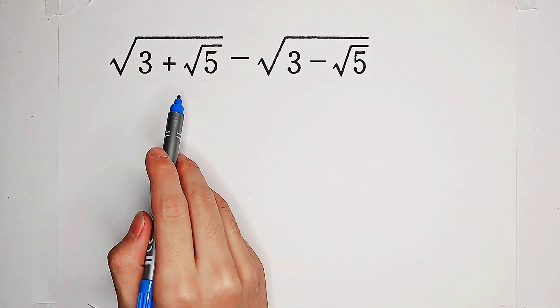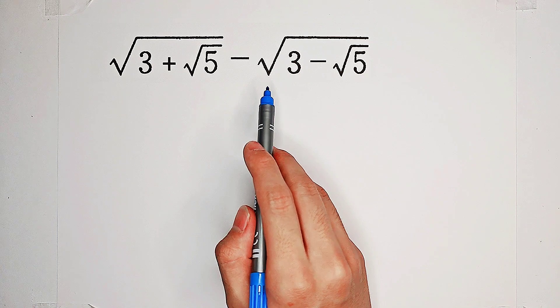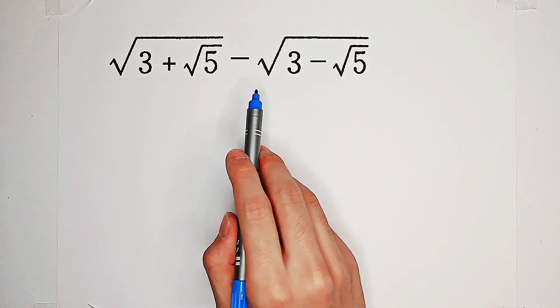Calculate square root of 3 plus square root of 5 minus square root of 3 minus square root of 5. How should I do with this question? Very good.